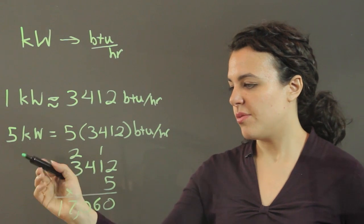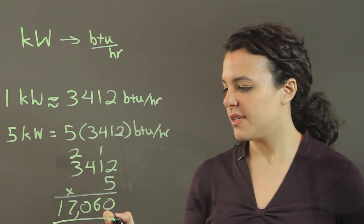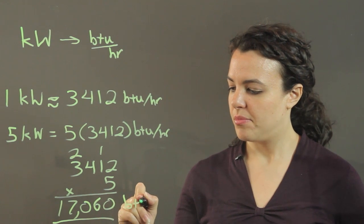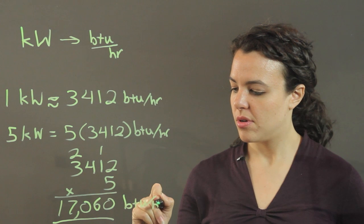And there, 5 kilowatts is equal to 17,060 BTUs per hour.